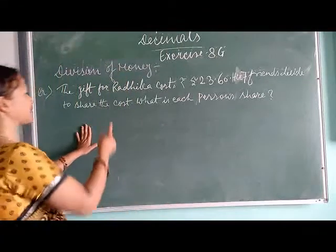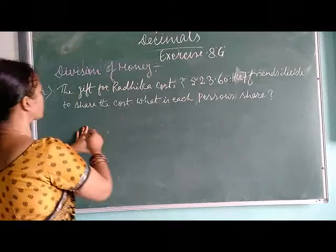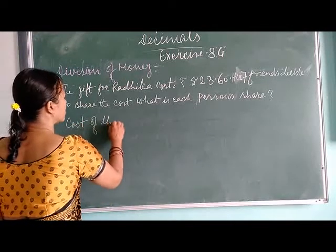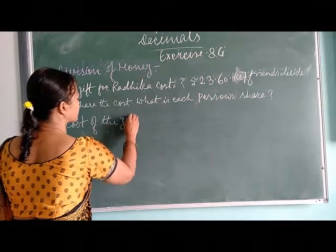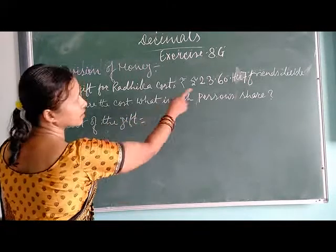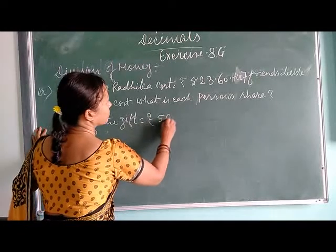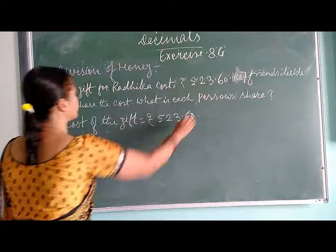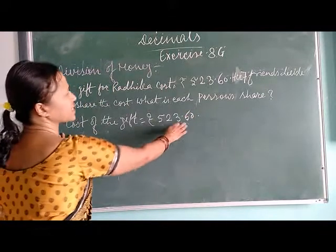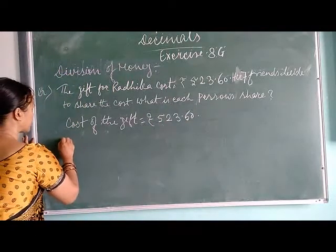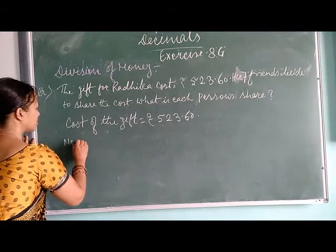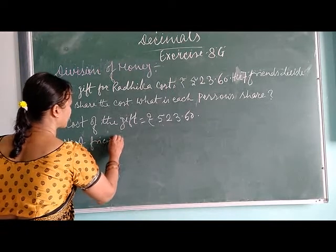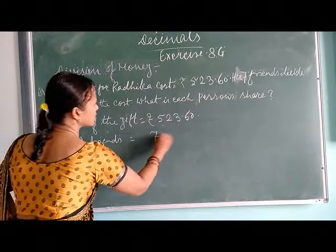So we have to divide it equally. How do we do this? First of all, the cost of the gift. The cost of the gift is 523.60 pounds. Total number of friends is equal to 7.